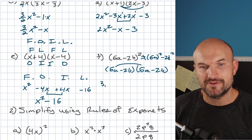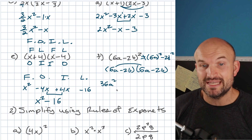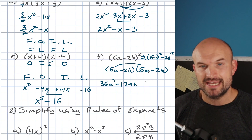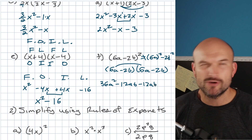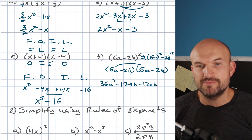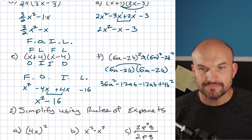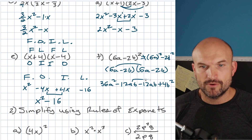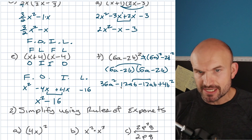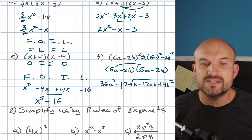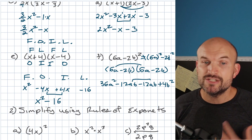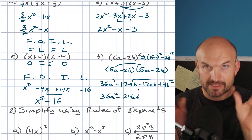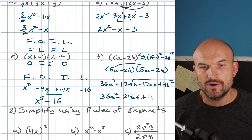Let's actually multiply out (6a − 2b)(6a − 2b): 6a times 6a is 36a squared, 6a times negative 2b is negative 12ab, negative 2b times 6a is another negative 12ab, and negative 2b times negative 2b is positive 4b squared. Combining the like terms: negative 12 plus negative 12 is negative 24 — those don't cancel. So the final answer is 36a squared minus 24ab plus 4b squared.